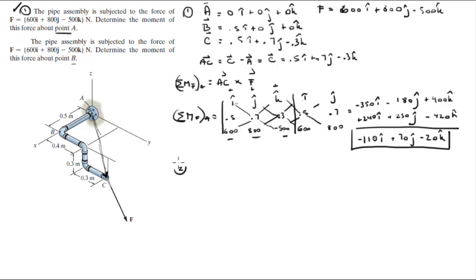Now for the second part, they want you to find the moment about B. To do that, you need to find the vector that goes from B to where the force starts, which is this vector right here, which is vector BC. Vector BC is vector C minus vector B, and it comes out to be 0 in the I plus 0.7 in the J minus 0.3 in the K.